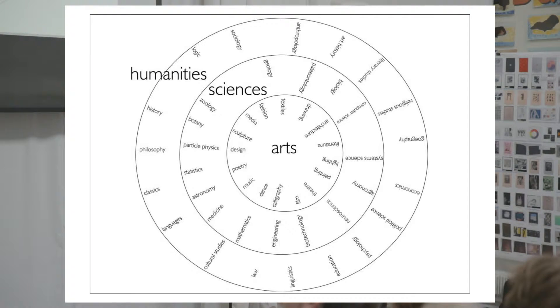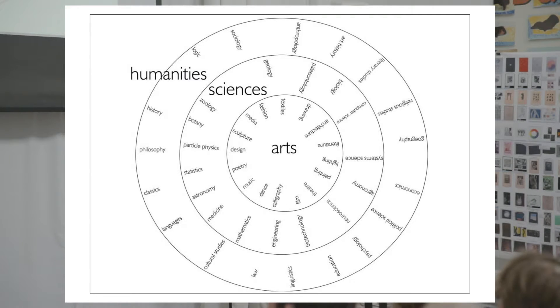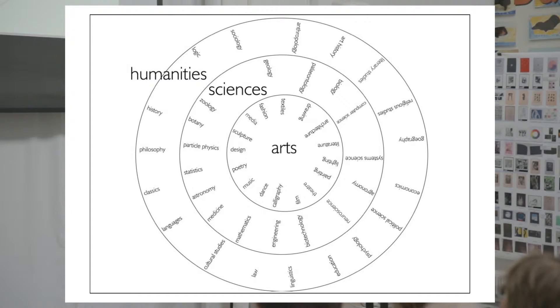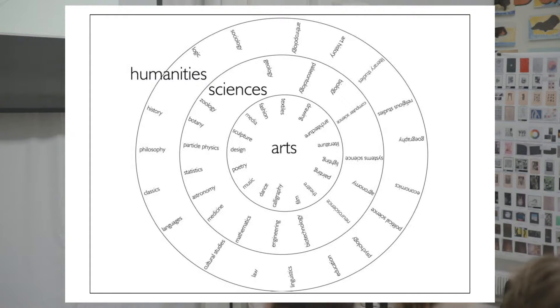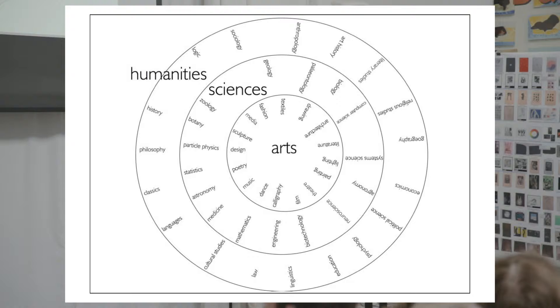So what is interdisciplinarity, and why are artists so good at it? Let's look at this set of rings sitting inside one another. We recognize the three great Western canonical areas of intellectual practice: the arts, the sciences, and the humanities. All through elementary education, school, and on to higher education, these three rings have been kept apart and taught separately until very recently.